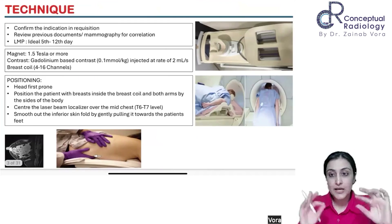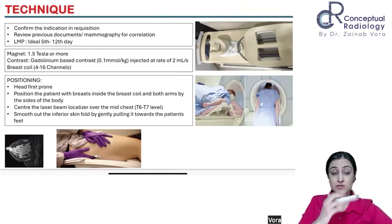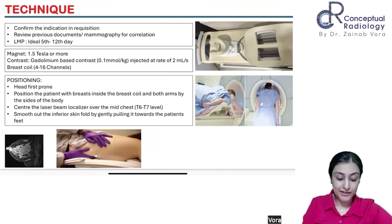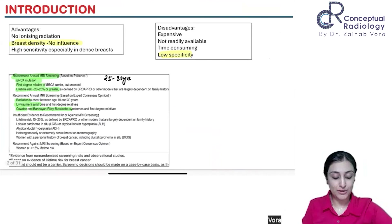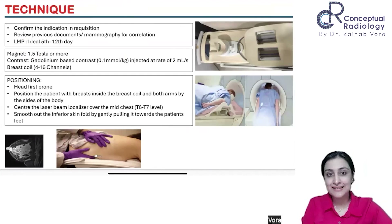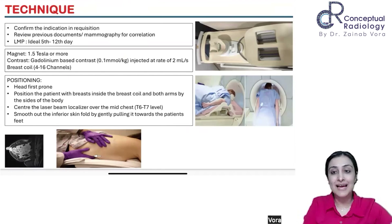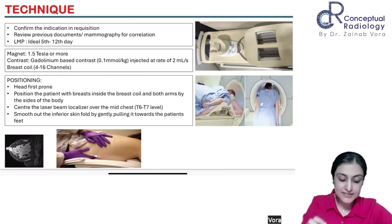Now the technique. First, confirm what the indication is — is breast MRI even required? Review the previous mammography. It's very unlikely that the first investigation ordered for a breast mass will be breast MRI. The patient would have undergone mammography and ultrasound, so review those before putting the patient in the scanner and confirm the indications.